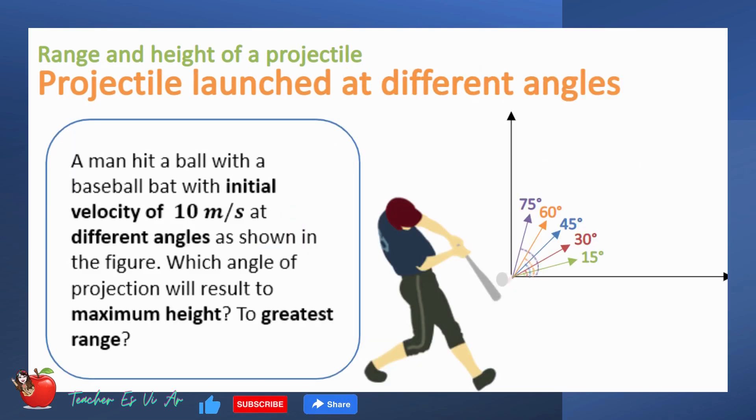Now let us discuss projectile launched at different angles. Consider a man hitting a ball with a baseball bat with an initial velocity of 10 meters per second at different angles as shown in the figure. Which angle of projection will result in maximum height? To the greatest range? Consider the initial position of a ball as the origin.